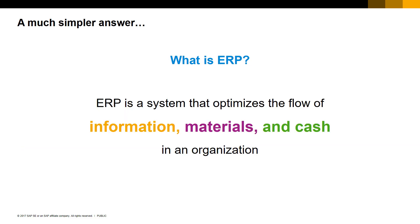Now, if you want a simple answer to the question — what is ERP — here you go. ERP is a system that optimizes the flow of information, materials, and cash in an organization. That's just 16 words. Pretty simple, right? No matter how sophisticated or complicated the individual business processes inside an ERP system get, they always come back to this definition.